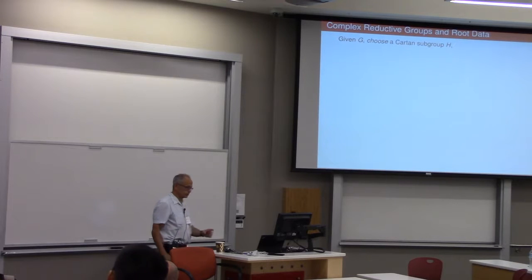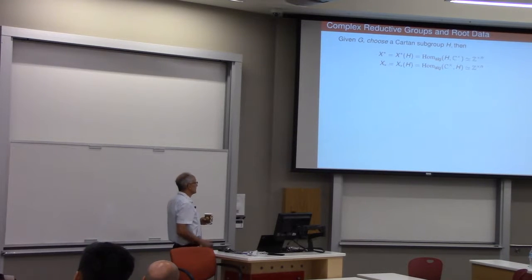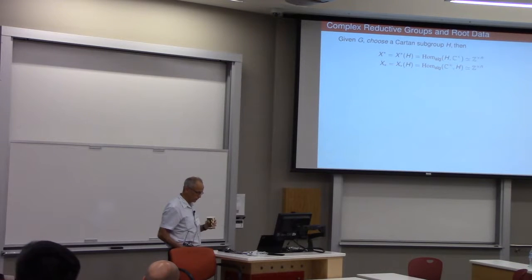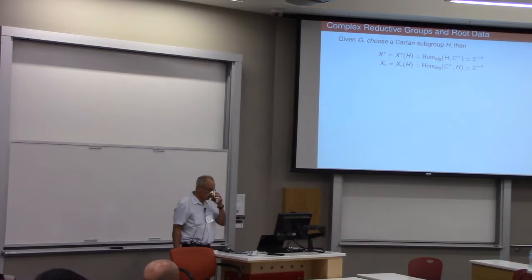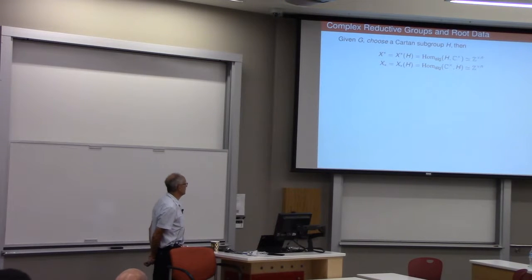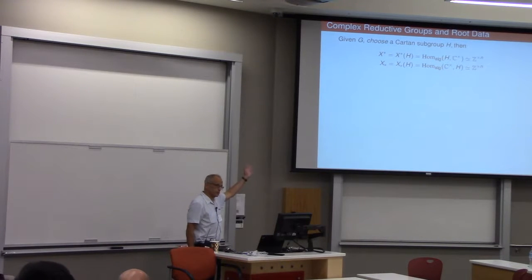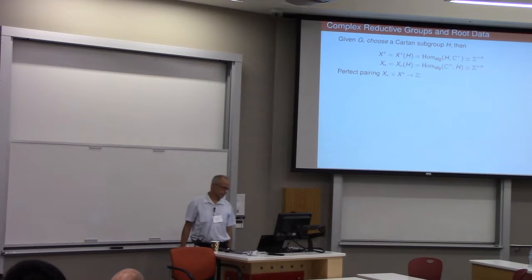So we're given our group G, complex group G. You choose a Cartan subgroup and you let X upper star of H, which we'll abbreviate X upper star, let that be the algebraic one-dimensional representations of H. And that's a lattice, it's Z^n. And you let X lower star be the maps from C cross into H. That's also a lattice of the same rank, Z^n. And these are really fundamental objects. These are built in right at the very beginning. These are behind the scenes in everything we do.